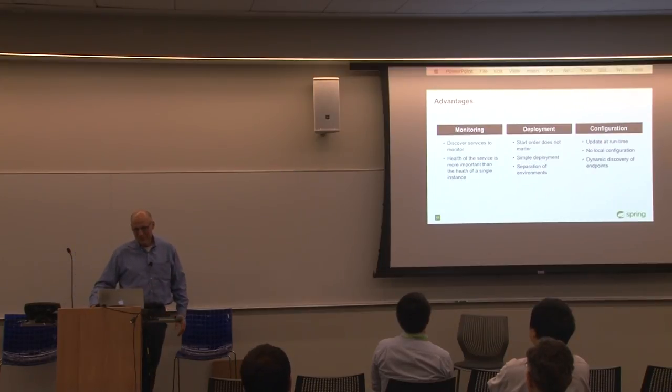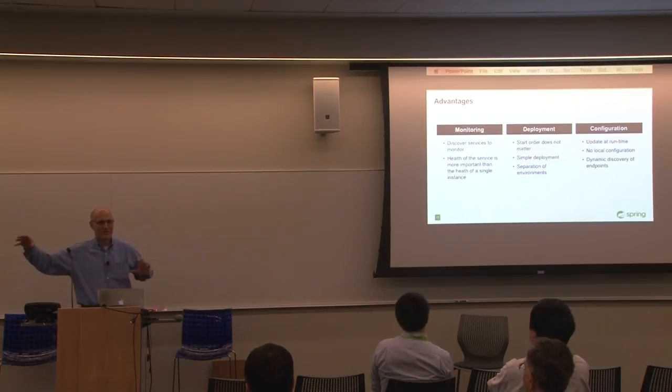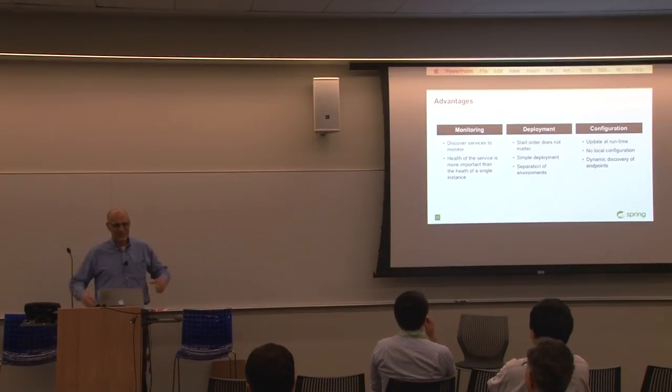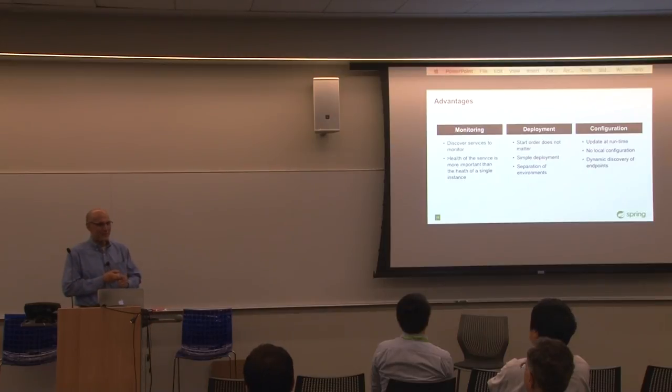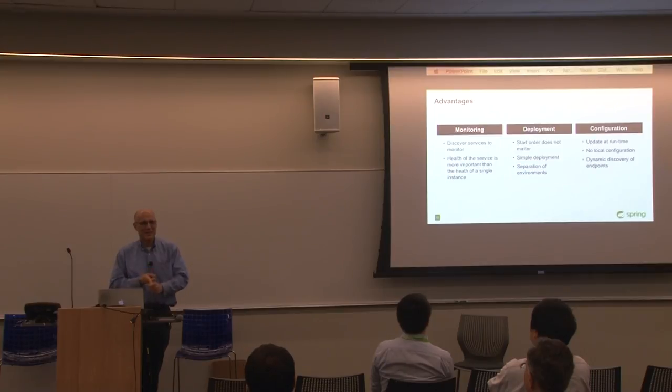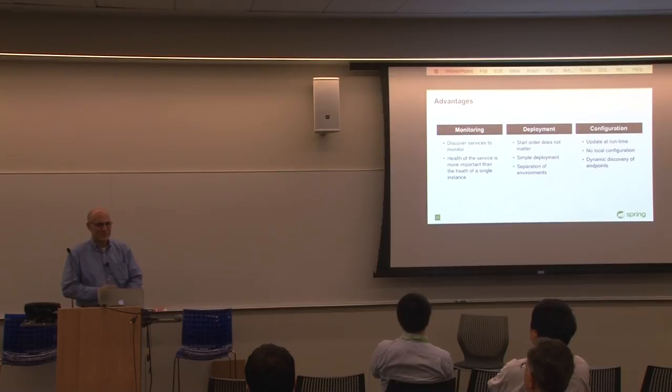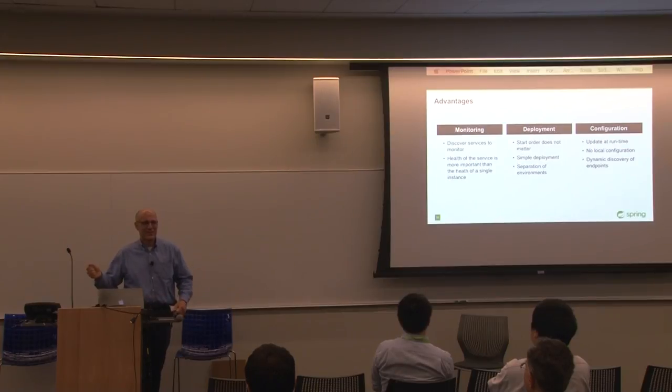Deployment start order doesn't matter. We definitely have applications in the past where we had to start them in a certain order, and it was a secret sauce. We had to get our nifty scripts perfect so that everything started up or it failed, and we got the calls in the middle of the night again. Simplifying deployment. With this, I'm not going to have a properties file to deploy with. That means I have a single war or jar file that I'm deploying that's the same in dev, UAT, and production. It's one file to drop to the disk. You could script it with Puppet, Ansible, or you could write a shell script that does a wget and pulls a file down and then calls install on it.